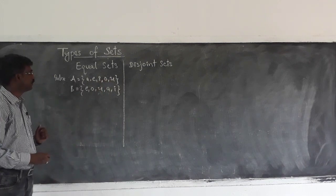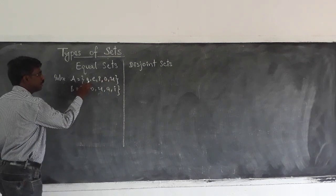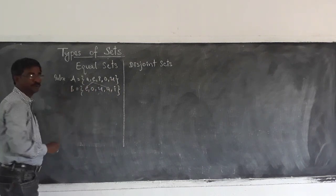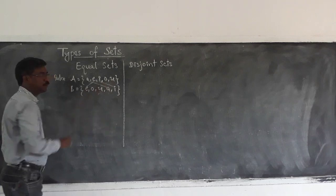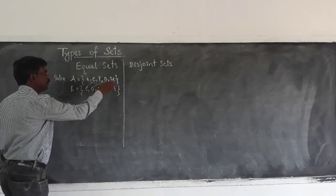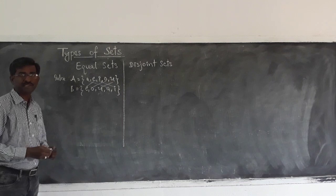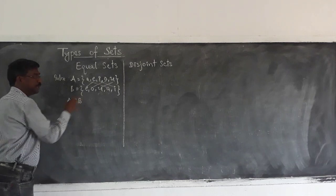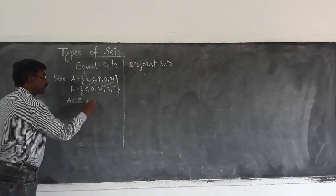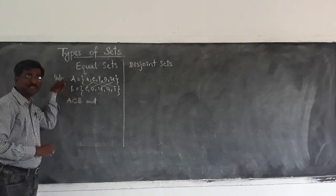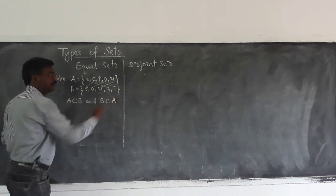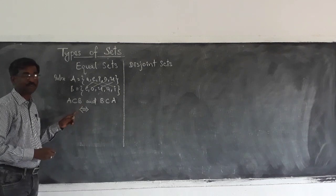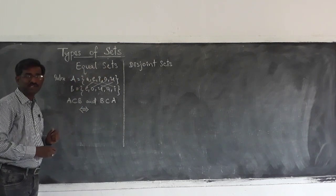Now observe these two sets. A exists in both, E exists in both, I exists in both, O exists in both, U exists in both. That means every element of A is in B, so A is a subset of B. And every element of B is in A, so B is a subset of A. This is only possible when these are equal sets.